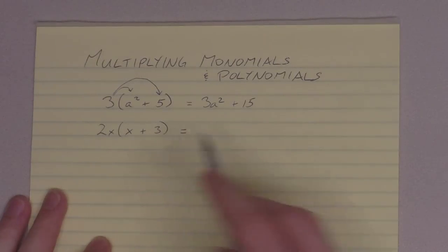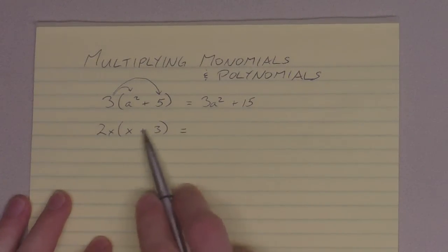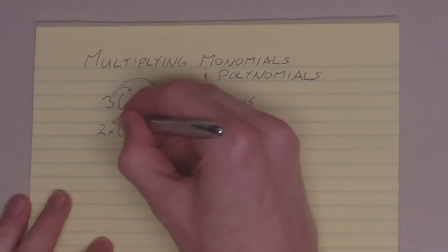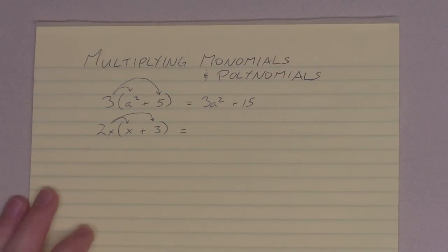2x times x plus 3. Here's our monomial 2x times x and then times 3. Two steps. Again, another binomial we're multiplying by.